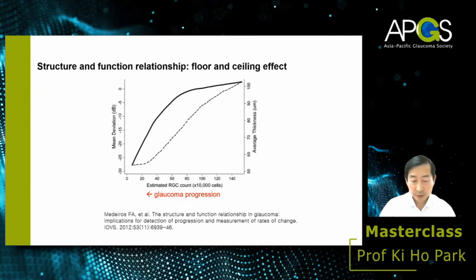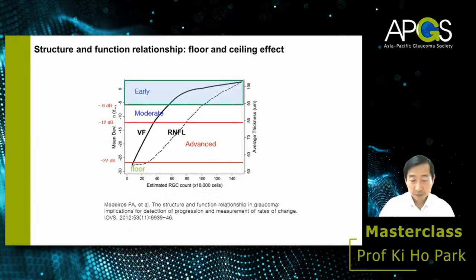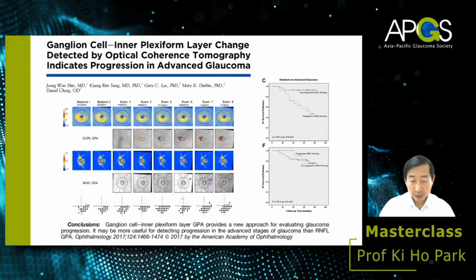In early glaucoma, visual field change is slow — the ceiling effect — while RNFL thickness change is relatively faster. In advanced glaucoma, RNFL change is very slow — the floor effect. However, the floor effect starts only in the very late stage, so even in most advanced glaucoma, RNFL thickness can still detect progression. GCIPL can detect progression in advanced glaucoma better than RNFL defect because GCIPL thickness reaches the floor effect later than RNFL thickness.